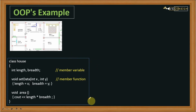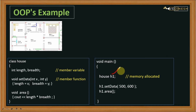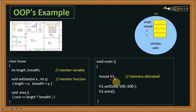Now let's see how to create an object. In order to create an object we need to write the name of the class followed by the object name. Here 'h1' is the object name. When we write this statement — class name and object name — memory gets allocated to the h1 object.